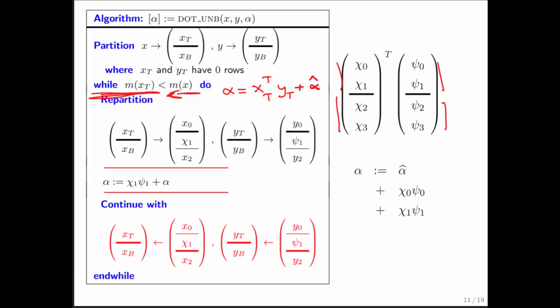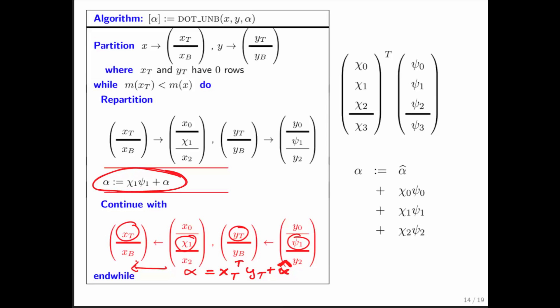Now, as part of the algorithm then, we repartition. We update, and we get to the bottom of the loop, where x top and y top are now redefined to include these extra elements. If you ask the question, what is the content of alpha here at the bottom of the loop? It is again alpha is equal to x top transpose y top plus alpha hat. Now notice that x top and y top now have an extra element, but alpha has also been updated with an extra computation.